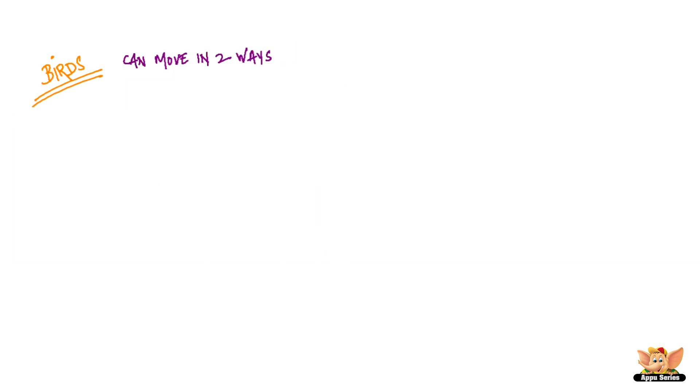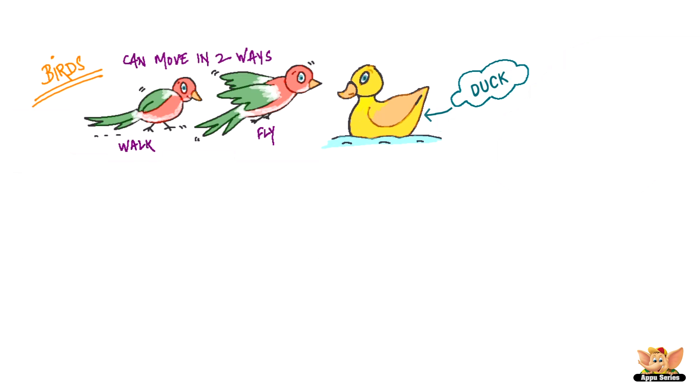Birds. Birds can move in two ways. They walk on the ground and fly in air. Some birds like ducks and geese can also swim in water. Birds have hollow and light bones that make it easier for them to lift in air.